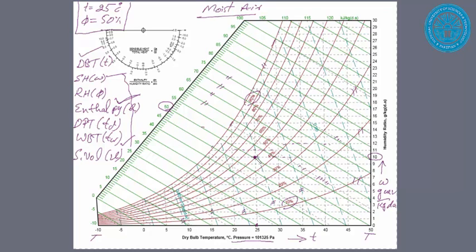Dew point temperature at this point is found by sketching a line to the left until it touches the saturated line, then draw a vertical straight line from that point. You see here that it is somewhere around 14 degrees Celsius.